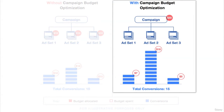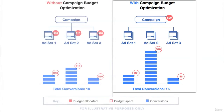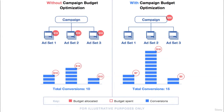The total conversions from the CBO campaign after spending $30 are: ad set 1 spent $7 and gave three sales, ad set 2 consumed the majority of the budget at $18 and gave 10 sales, whereas ad set 3 spent $5 and gave two sales.